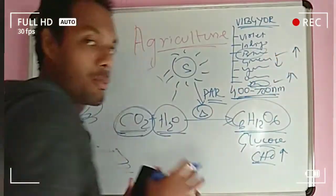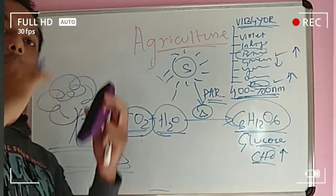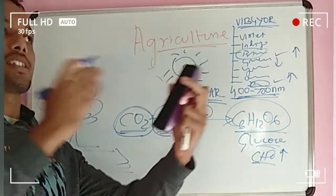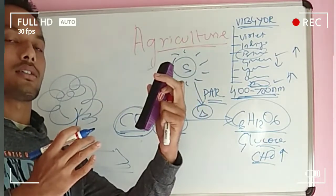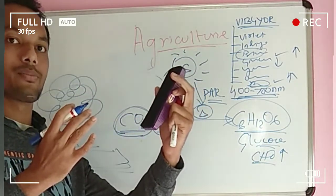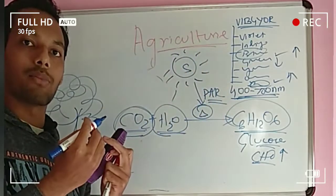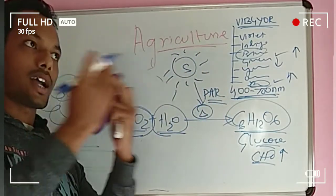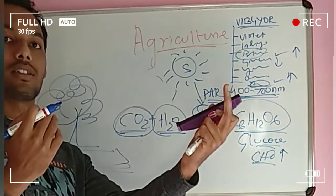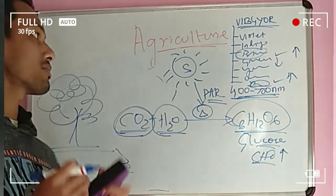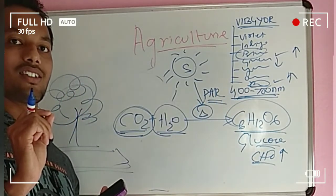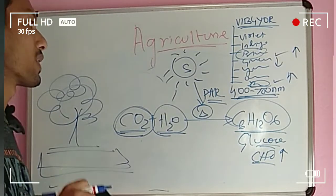Plants always reflect the green radiation — that is why whenever we see any plant, it appears green. The green radiation is reflected by the plant and hits our eyes, making it look green. Green is the weakest band in terms of photosynthesis.